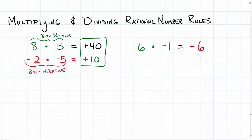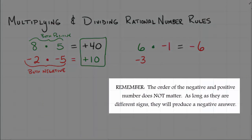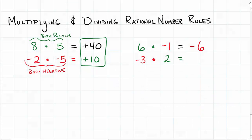If we flip those and put the negative first, let's say we have negative 3 and we multiply that times positive 2, we're going to still end up with a negative answer because there's one negative in the multiplication problem. So again, we get negative 6.